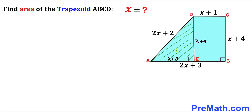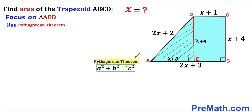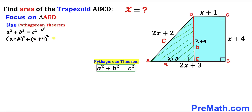So the side lengths of right triangle AED are x plus 2, x plus 4, and 2x plus 2. Now let's focus on this right triangle AED and solve for x using the Pythagorean theorem: A squared plus B squared equals C squared. The longest side, 2x plus 2, is our hypotenuse C. So we write: (x plus 2) squared plus (x plus 4) squared equals (2x plus 2) squared.